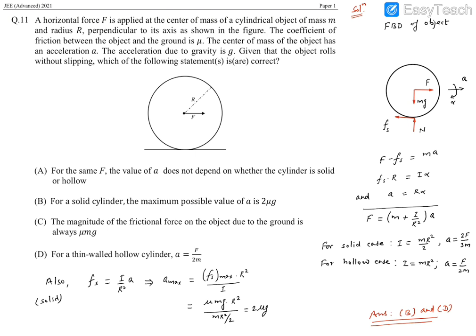For the solid case, if we put I = mR²/2, this becomes m/2, so overall this becomes 3m/2. Therefore a becomes 2F/3m.